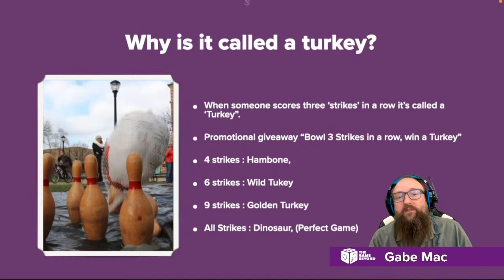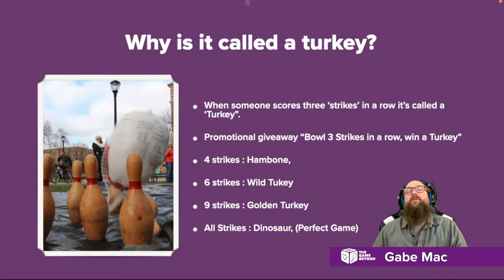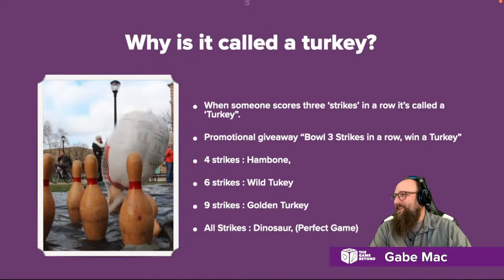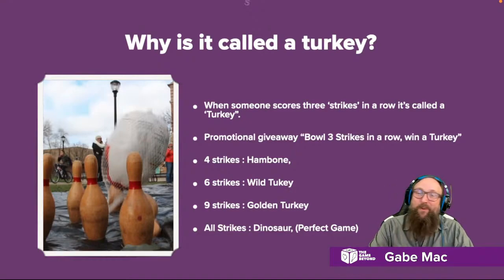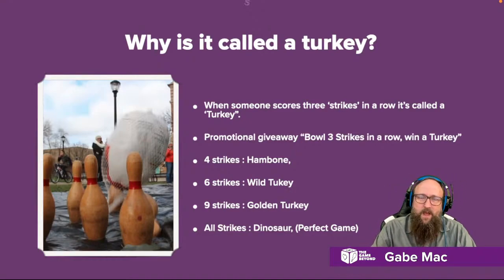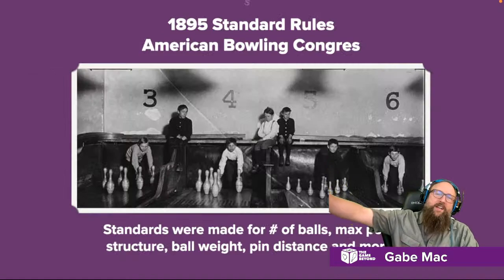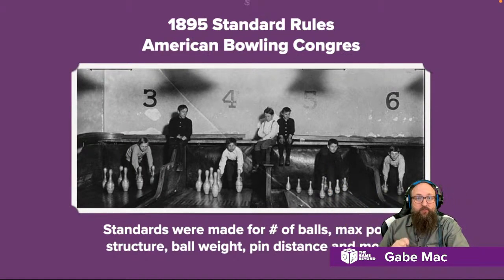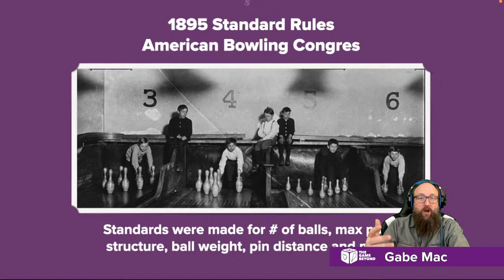As a promotional giveaway around the 1800s, for three strikes in a row you would get a turkey. Four strikes in a row earned you a ham bone, six strikes in a row was a wild turkey, and nine strikes was called a golden turkey — though there's no recording of an actual golden turkey being given. A perfect game is called a dinosaur because it hardly ever happens. Grazio Castellano was the first to bowl a perfect game on live television on October 4th, 1953.